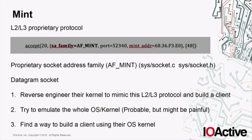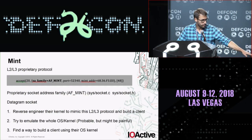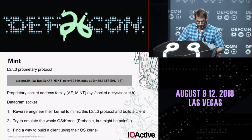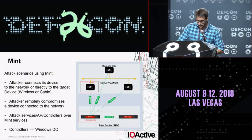We have three options: first, reverse engineer their kernel and try to make your own MINT client on your Linux box — technically possible. Second, try to emulate the whole operating system and kernel and then make your own MINT client — also technically possible but could be a pain. The quickest option, which is what I took, is to find a way to build a client using their own kernel. Basically, I'm using a device as the attacker, running my own MINT client in the OS. An attacker could also use options one or two with their own MINT client on their Linux box.